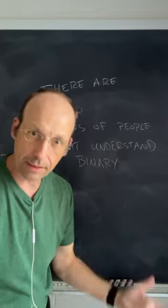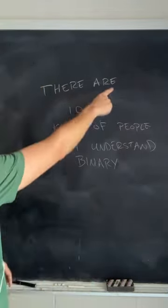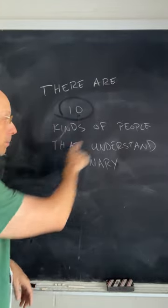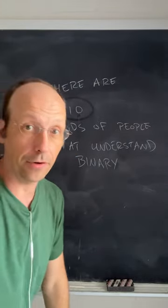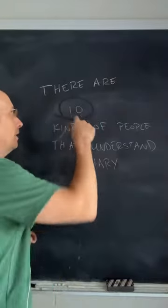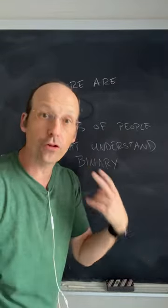There's a joke that you sometimes see and it looks like this. There are 10 kinds of people that understand binary numbers, and the joke is that that's not ten, that's binary for two.